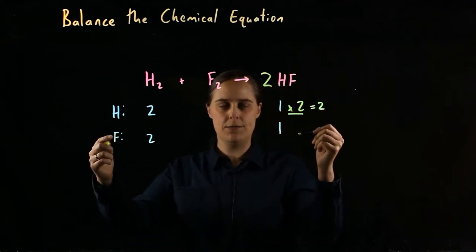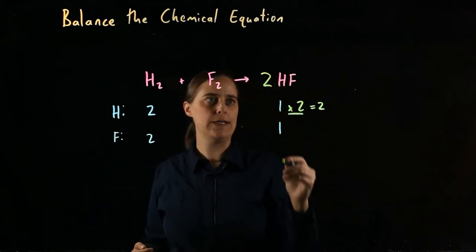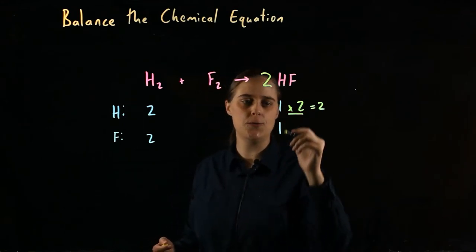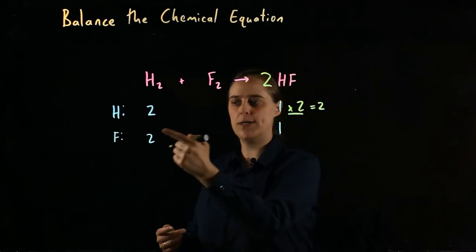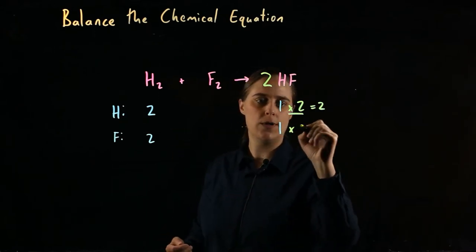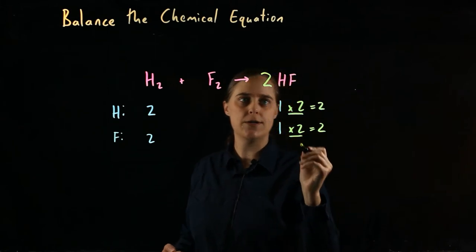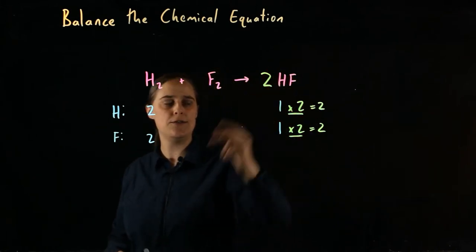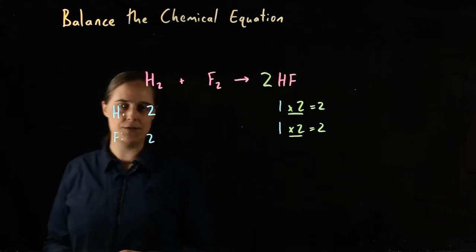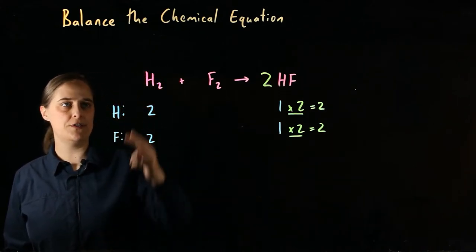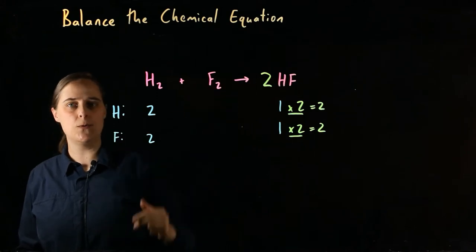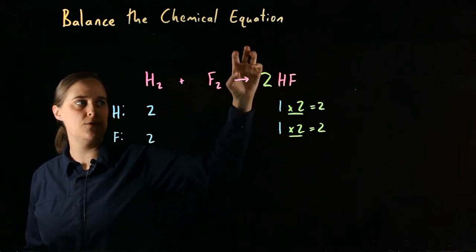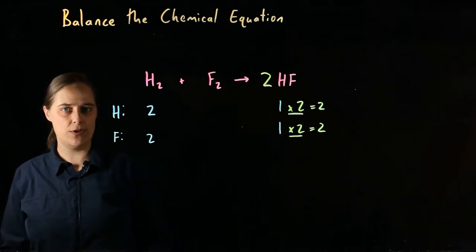We would come to the same conclusion if we instead looked at fluorine. Each HF molecule has one atom of fluorine, and I want two. One times two equals two. So regardless of which element you look at, you need two molecules of HF as your product. Our stoichiometric coefficients are one, one, two. No one bothers to write the ones — you just write any numbers that are anything other than one.